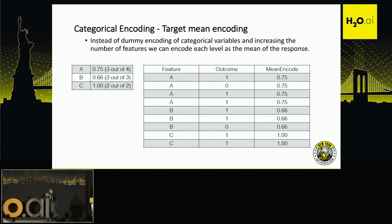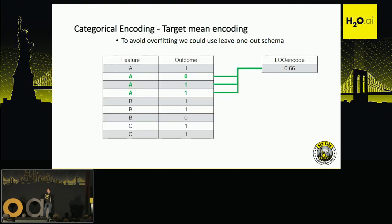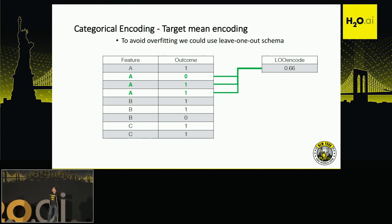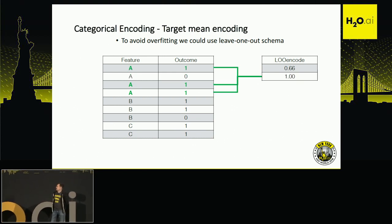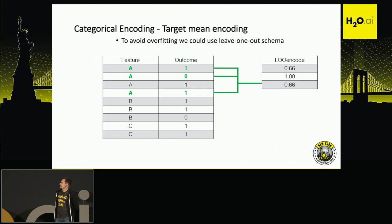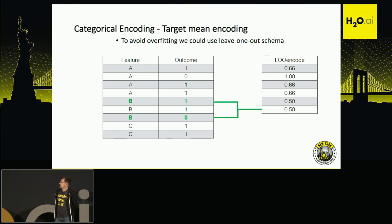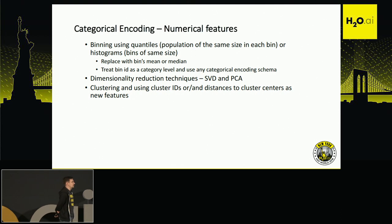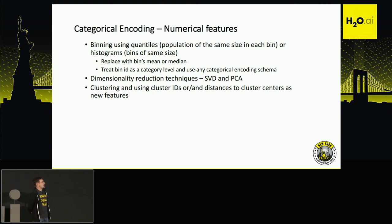A complementary approach is the leave-one-out schema: for each row in the dataset, you calculate the mean response by removing that particular row and using the rest to compute the mean. This is exactly what H2O3's target categorical encoding does right now — it's already available and implemented in the open-source H2O3 core.